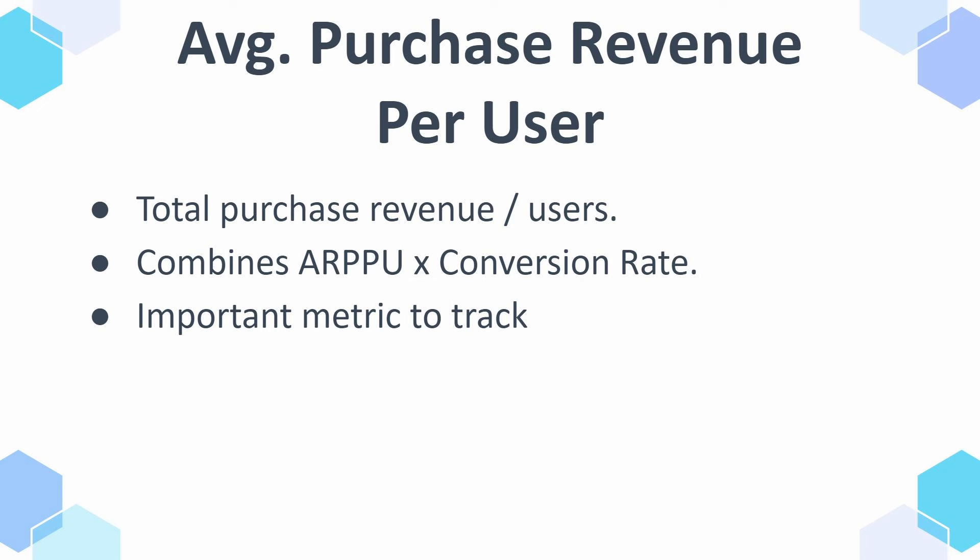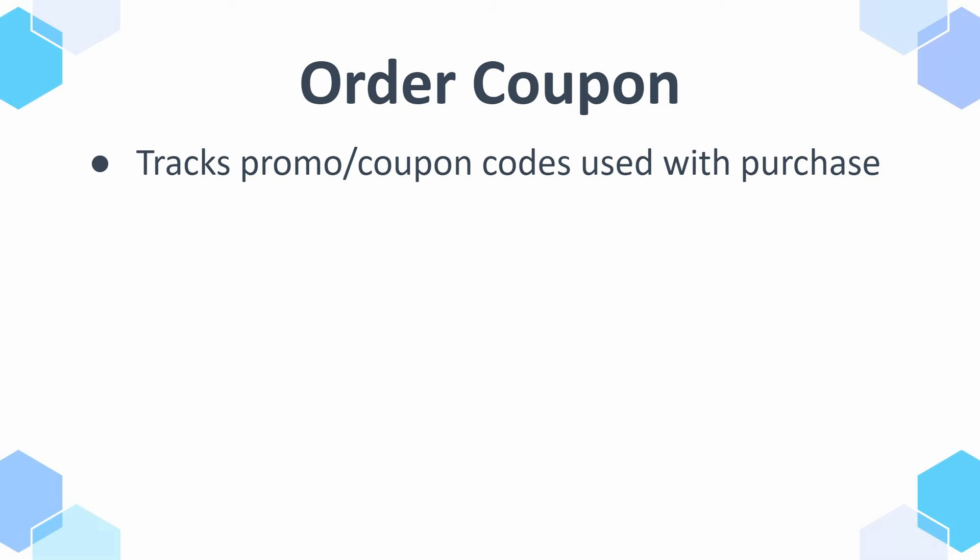If you look at e-commerce, this is a value that combines average order value and conversion rate. Why is it important? Sometimes you improve your website and increase conversion rate, but then decrease your average order value — so is it actually better? Average purchase revenue per user would tell you that. It's a really important overall metric because you want to not only convert more people but also sell at a higher average order. Then we have order coupon, which simply tracks the promo or coupon codes used with purchases.